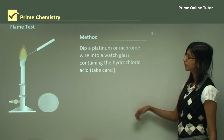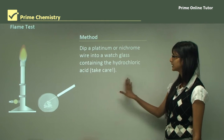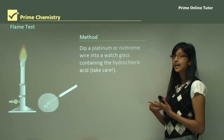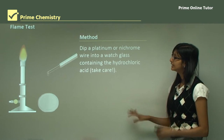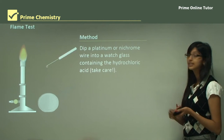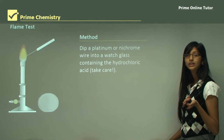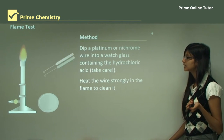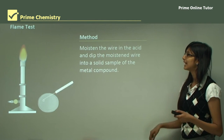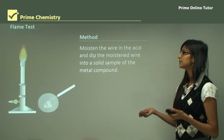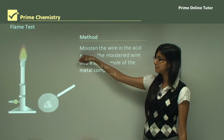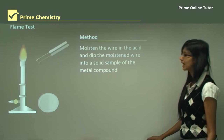For the method: dip a platinum or nichrome wire into a watch glass containing hydrochloric acid — please take care as hydrochloric acid is very corrosive to skin and eyes, so wear protective clothing. As shown in the animation, place the wire in the flame first to clean it and ensure no contaminants are present. Then moisten the wire in the acid and dip the moistened wire into a solid sample of the metal compound.